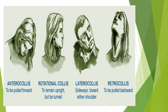This is an image of a patient having different forms of torticollis based on which type of muscles is affected. The first one is anterocollis — the head is pulled forward. The second is rotational collis — the head remains upright but is turned. The third is lateral collis — the head tilts sideways toward either shoulder. And retrocollis is when the head is pulled backward.